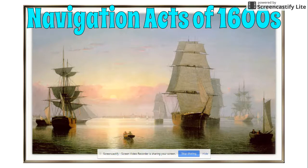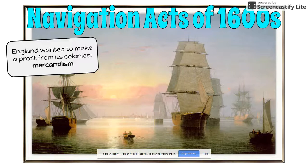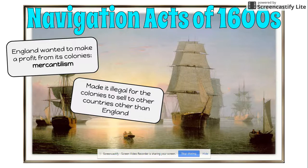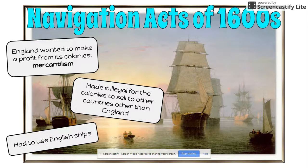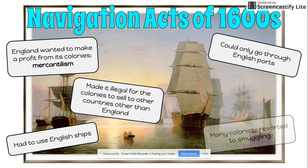We're going to begin with the Navigation Acts of the 1600s. These are a series of laws passed in England regarding the colonies and how they were able to trade. England, because they had these colonies, wanted to make the biggest profit from them — that was the idea behind mercantilism. Most countries practiced mercantilism, making money through trade. So England restricted colonial trade: it was illegal for colonies to sell to countries other than England, they could only use English ships, and could only go through English ports. This really limited free trade, and many colonists resorted to smuggling goods in and out.